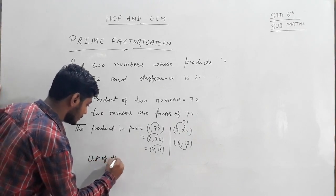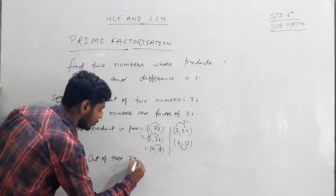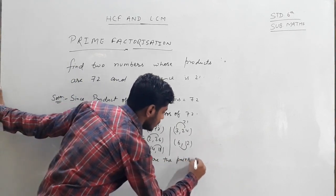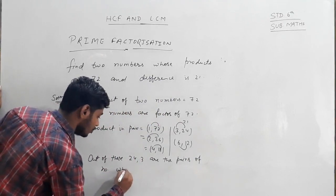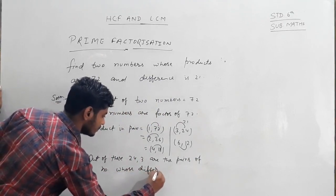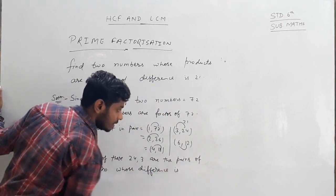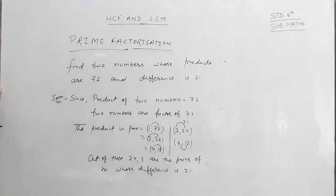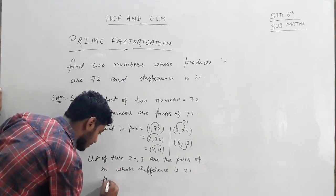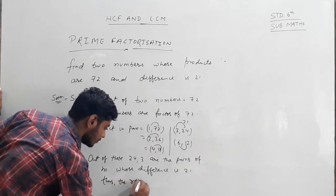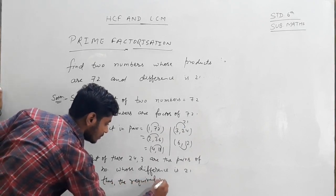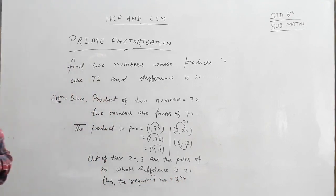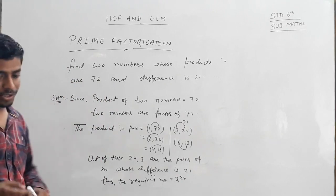Therefore, the two numbers are, the required numbers are 3 and 24. This one has to be solved.